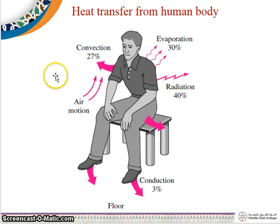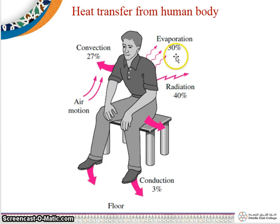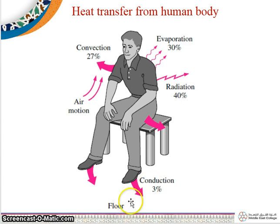The human body transfers heat in different ways: through convection is 27%, through evaporation is 30%, through radiation is 40%, and through conduction is 3%.